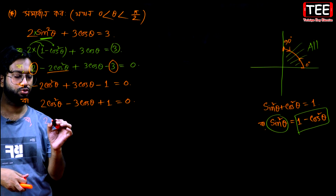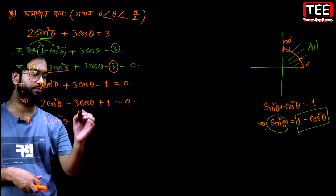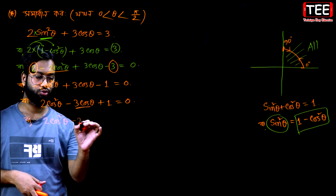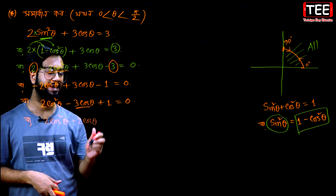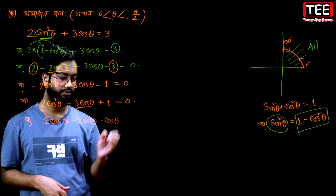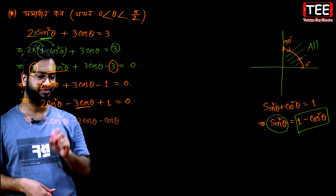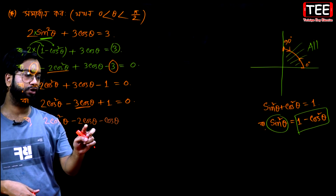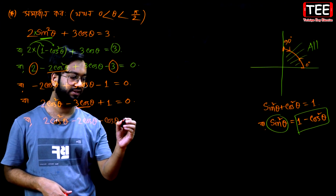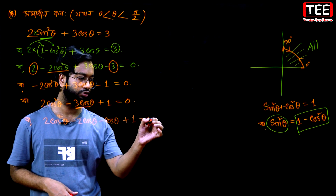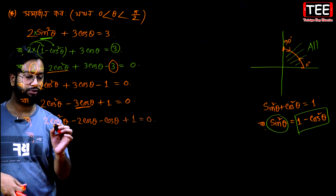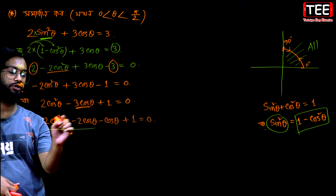So if we just write 2cos²θ, I'll write it down: 2cos²θ, and minus 2cosθ, minus 2cosθ. Then it will be minus 3cosθ and plus 1, equal to 0. So these are the two things. Here, this two cosθ is common.